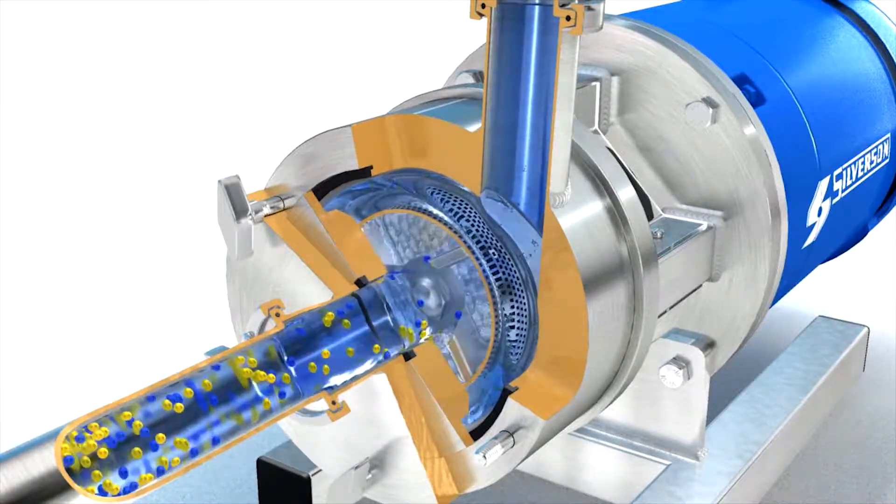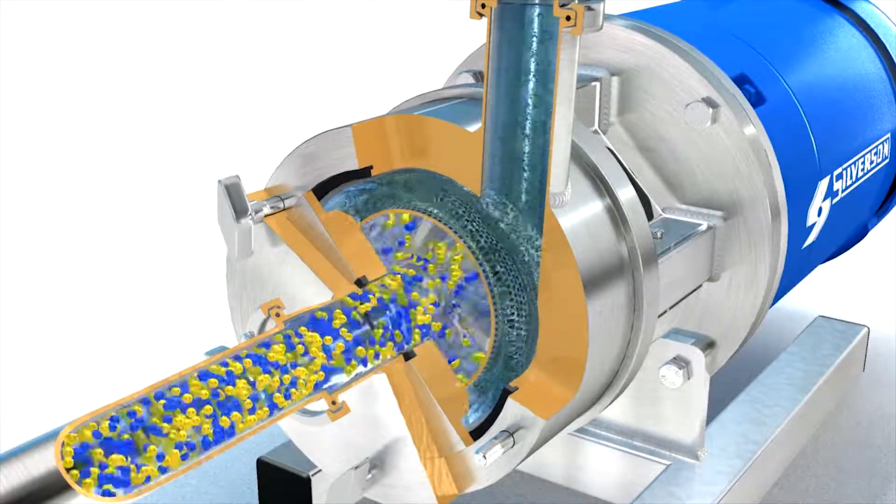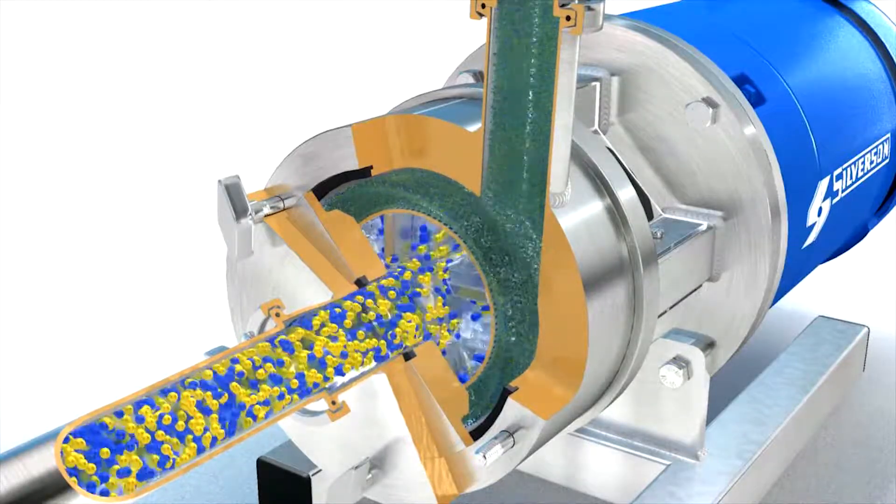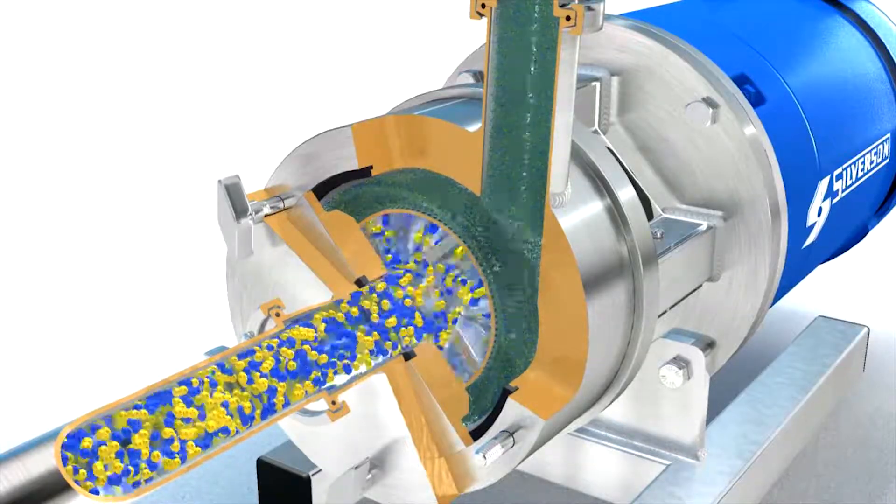Centrifugal force then drives materials towards the periphery of the workhead, where they are subjected to a milling action in the precision gap between the rotor and stator.